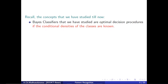We are going to get minimum classification error with the Bayes classifier or MAP classifier only when you know the prior probabilities and when you know the likelihood functions properly. If you are able to estimate them very well, then we are going to get a minimum error classification with the help of this MAP rule.